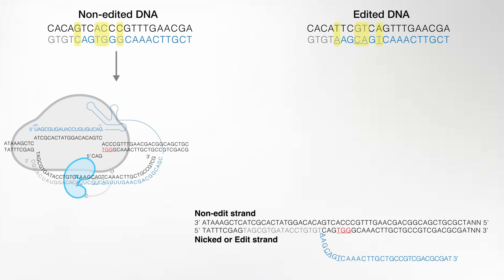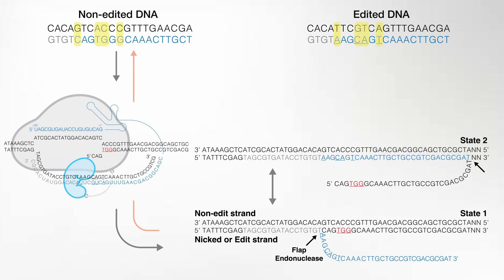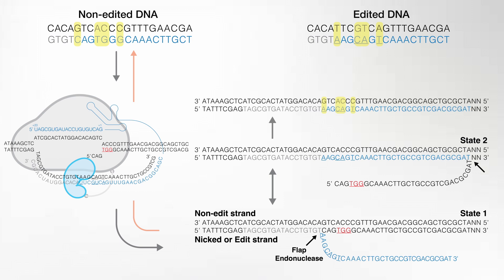We label the flap-containing DNA strand the Edit strand because it carries the new information, and this configuration is called State 1. This flap can be processed by flap endonucleases and ligases, similar to Okazaki fragment maturation. If State 1 is resolved by flap endonucleases, the new information is cut out and never incorporated — this pathway gives no edit, and the repair DNA looks like the original. But State 1 can equilibrate into State 2, where the flap invades and pairs with the Edit strand, and flap processing incorporates the new information into the genomic DNA.